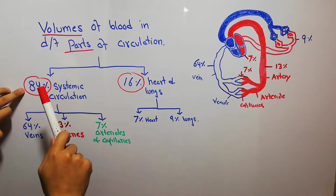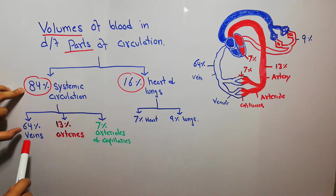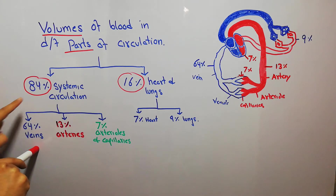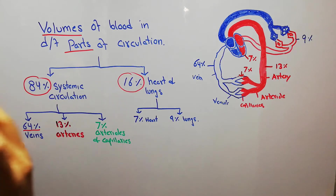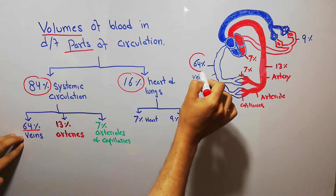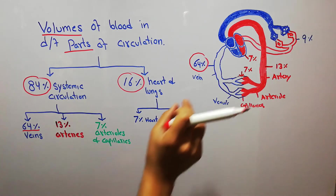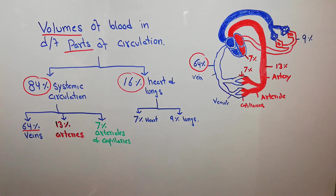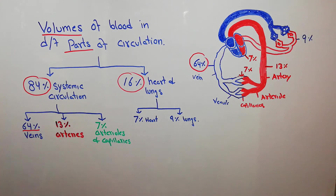This systemic circulation — the 84% — is divided into three main parts. 64% of this blood is present in the veins only. This is the single largest volume of blood in any compartment. The walls of the veins are very thin and can accommodate a lot of blood, acting as a reservoir. In case there is a need for blood, it can push this blood back into the right side of the heart.